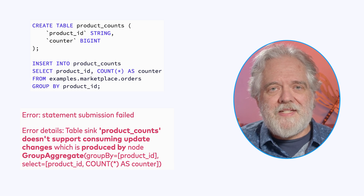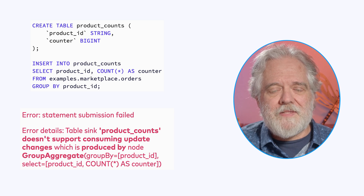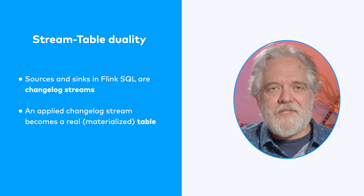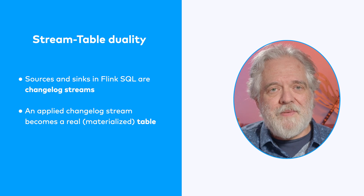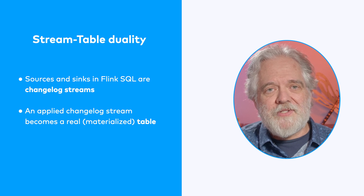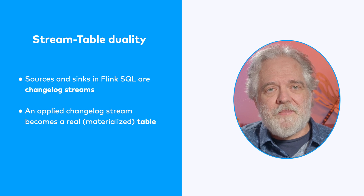To understand these errors, we need to step back and examine what it means that internally Flink SQL is always processing changelog streams. Along the way, I'll share some best practices that will help keep you out of trouble. Whenever you use create table to describe a source for Flink SQL, that source is backed by a stream of records that describe changes to a table. That stream of changes forms a changelog stream. If you are familiar with change data capture streams or database write-ahead logs, this is the same concept.